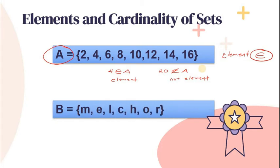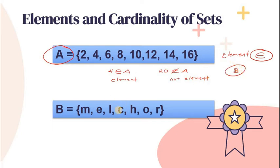Next, we have the cardinality. Pag sinabi natin cardinality, it has something to do with how many elements are there in a given set. Balikyan natin sa set A — sa set A ay merong ilang elements? 1, 2, 3, 4, 5, 6, 7, 8. Ibig sabihin, sa set A ay merong cardinality na 8. For set B, my name — Melcher — meron tayo ditong cardinality na 7.